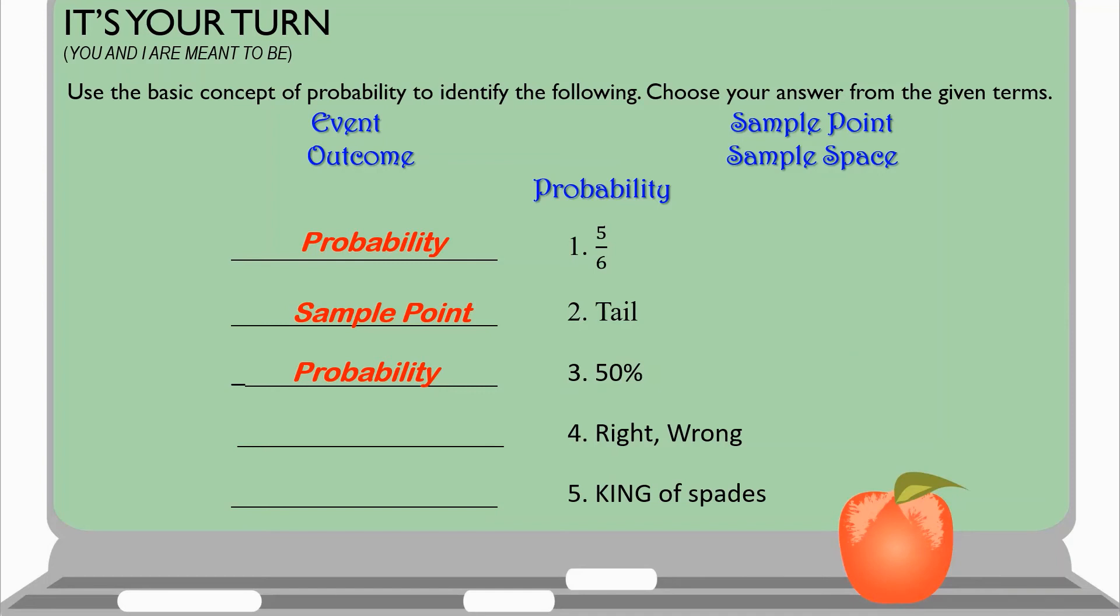For number 4, the right or wrong, we have the sample space. And the last one, we have the king of spades. So, it is a sample point.